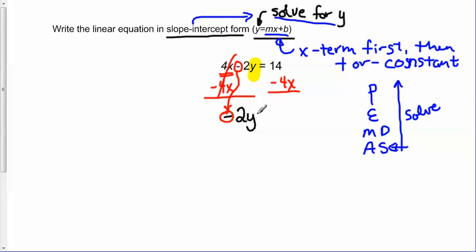Now on the right side, we have 14 minus 4x. But remember that we said that we want the x term to come first. So instead of writing 14 minus 4x, I'm going to write negative 4x plus 14.